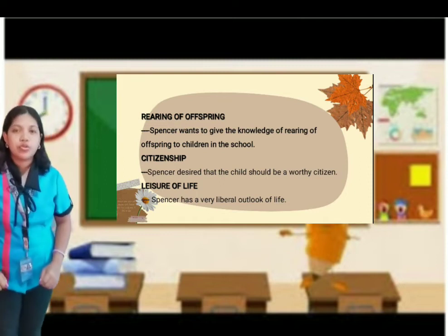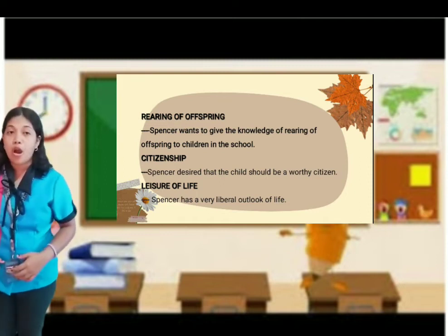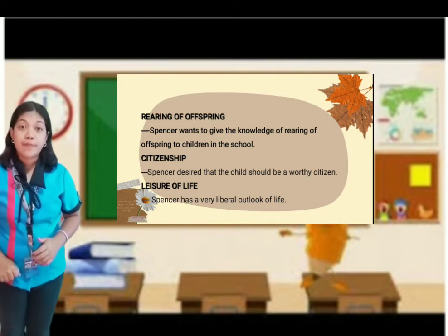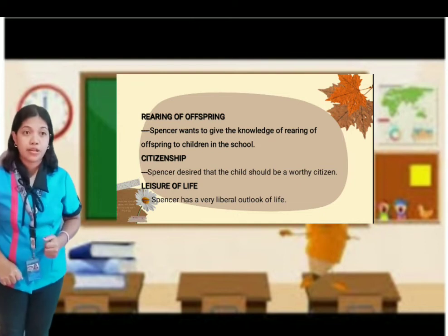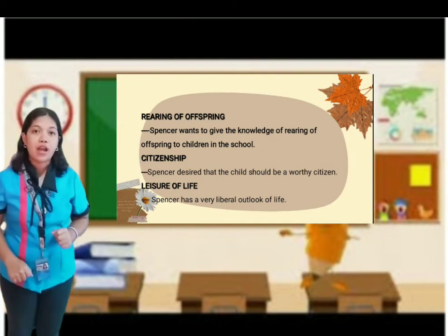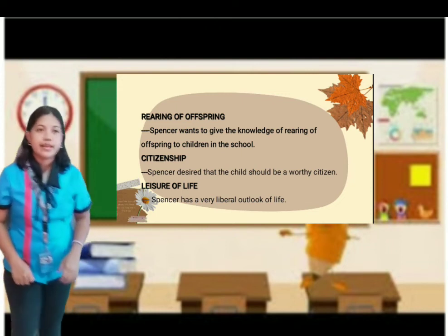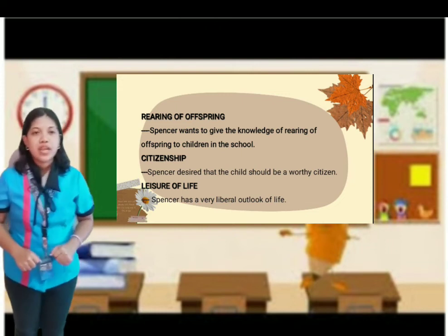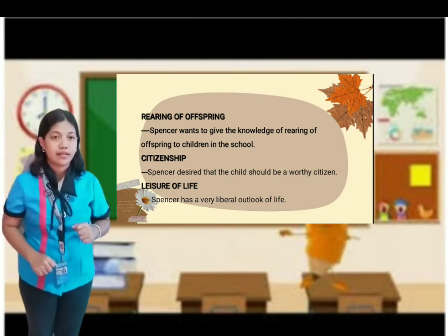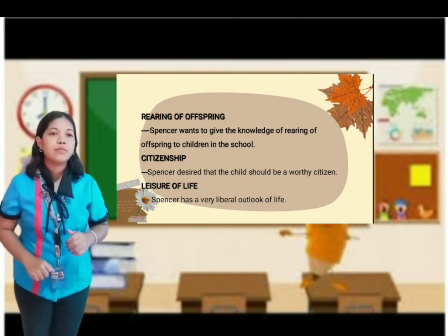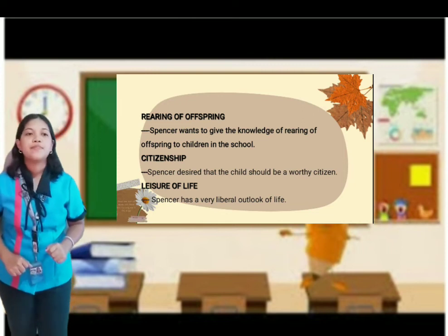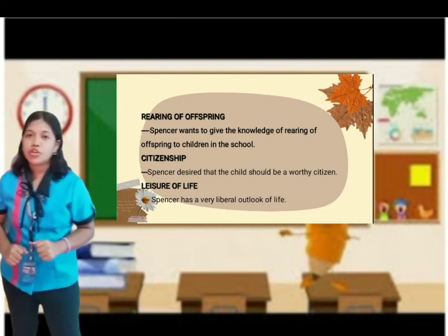The third one is rearing of offspring. Spencer wants to give children knowledge of rearing of offspring in school because it is difficult for them to rear their children properly. Therefore, parents should be prepared for bringing up their children. The fourth one is citizenship. Spencer desires that a child should be a worthy citizen. He thinks that history cannot be used properly without the knowledge of science.